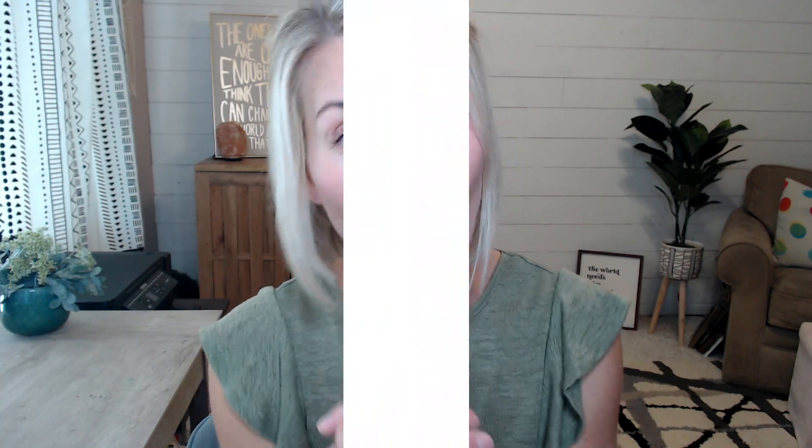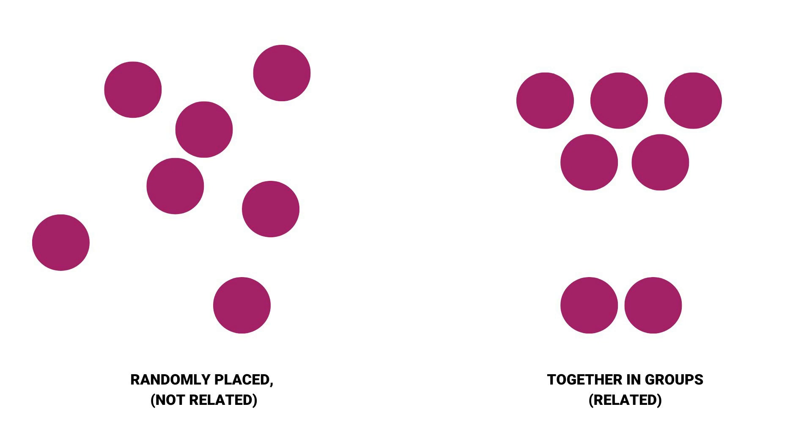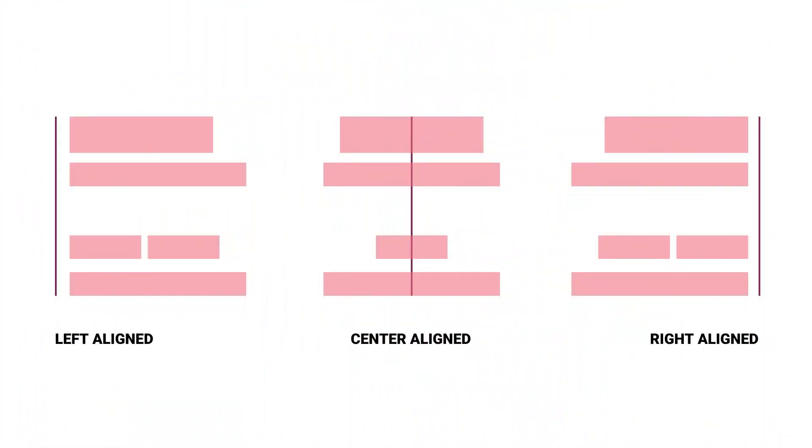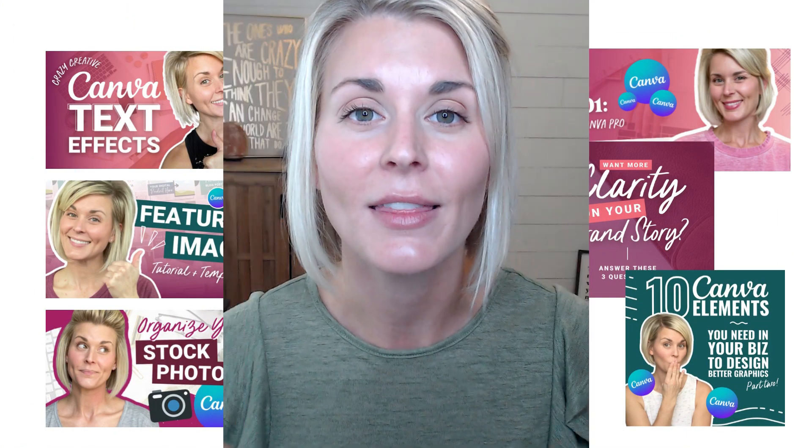If something in your design doesn't have a purpose, don't use it — it'll just clutter your graphic. There's an acronym to help you remember the design principles: PARC. The P stands for Proximity — the spatial relationship between all elements in your design. Elements that belong together should be in closer proximity; elements that don't belong together should have more space between them. The A stands for Alignment — all text and elements should be perfectly aligned in your social media graphics.